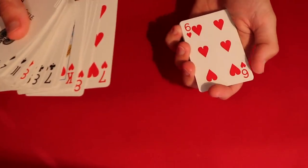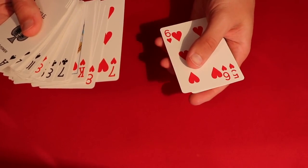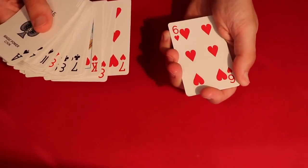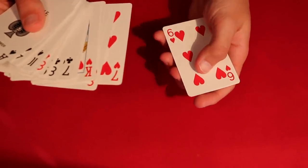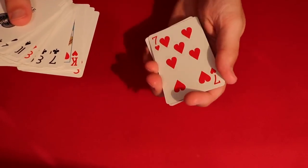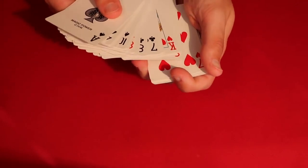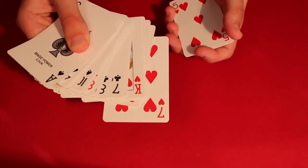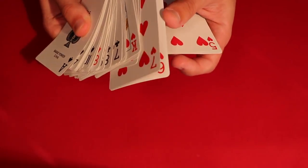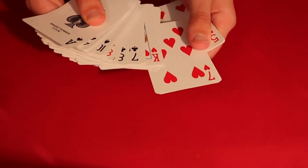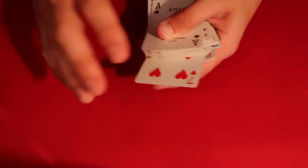While the spectators are focused on that seven or whatever card they picked, you just have to put a pinky break underneath the next card below. In this case, this is going to be the Six of Hearts. You pull off their card, get a pinky break the card below that, leave their choice onto the pinky break, square that up, and then push forward both cards. In this case, I do have both the seven and the six in that grip. Push this forward, square up the deck.